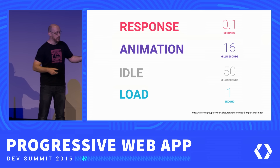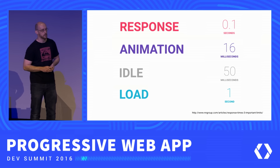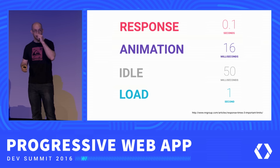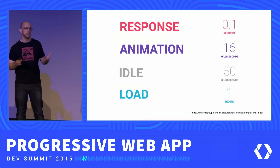For example, if you tap on a screen, you expect something to be coming back on screen in under a tenth of a second. If you scroll or there's a transition, that's an animation, and we want that at 60 frames a second. Idle is a bit of a funny one — the general idea is that you should do work when the user isn't interacting and when the main thread has some time, in 50 millisecond chunks.